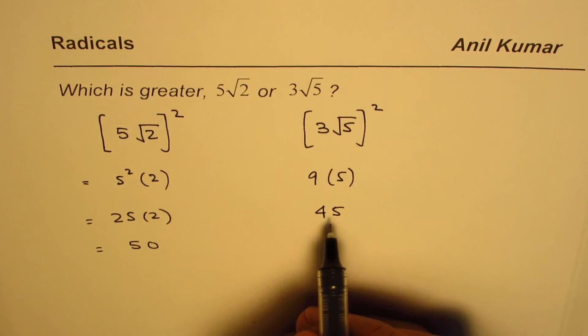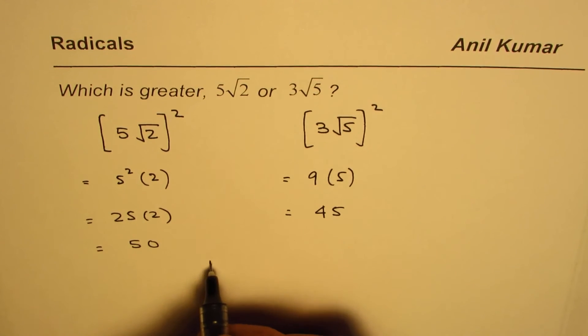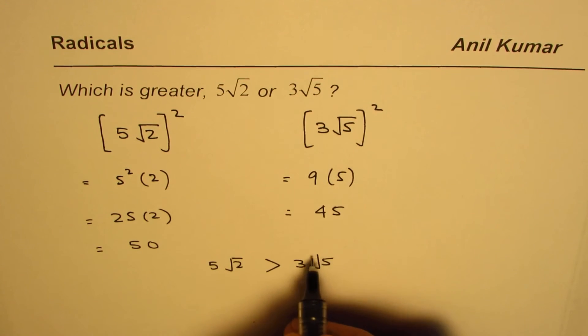Clearly 50 is greater than 45. Correct? And therefore we can write 5 square root 2 is greater than 3 square root 5.